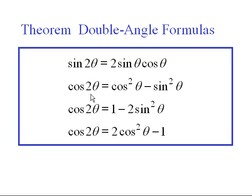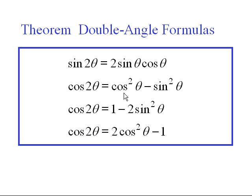For the cosine formula, the cosine of the sum of angles is cosine of the first times cosine of the second, minus sine of the first times the sine of the second. Since the first and the second are the same angle — theta plus theta — you get two factors of cosine and two factors of sine: cosine squared theta minus sine squared theta.